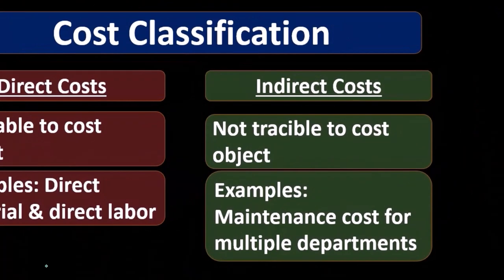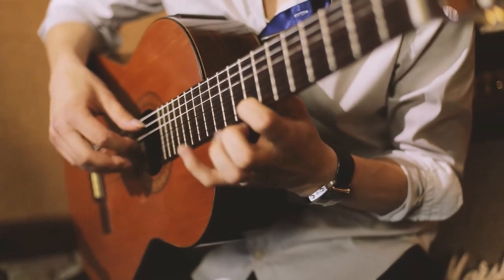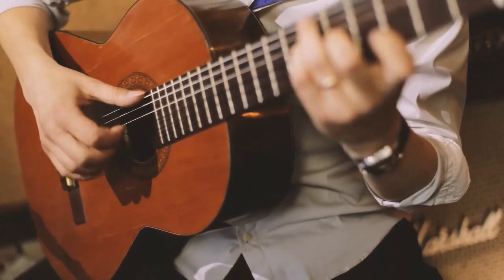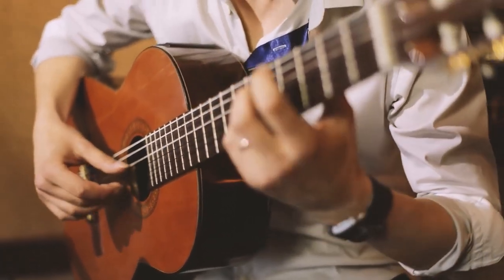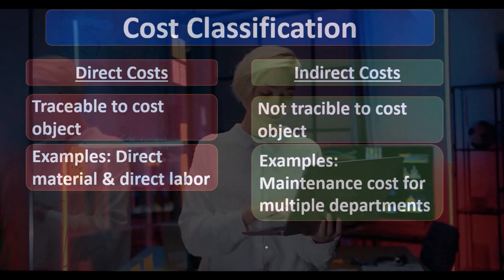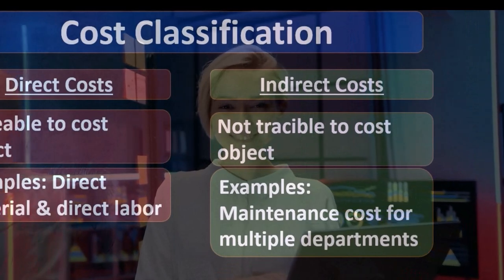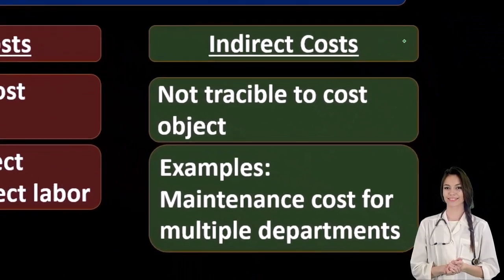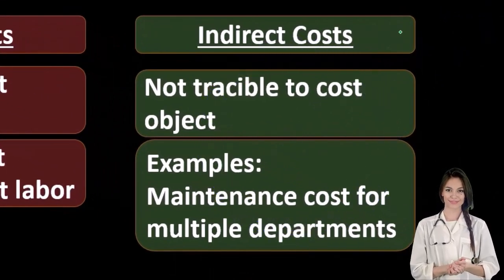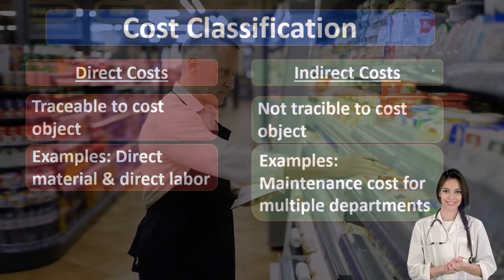We have a similar problem when talking about small materials like glue for a guitar. It might be possible to classify glue as a direct material that we can allocate specifically to a particular guitar it was used in. However, doing so would typically not be cost effective. So for something like glue, we might have to use some other type of allocation method. We don't know exactly which unit of inventory it was used on, so it's indirect, and we have to find some way to take these indirect costs and properly allocate them.